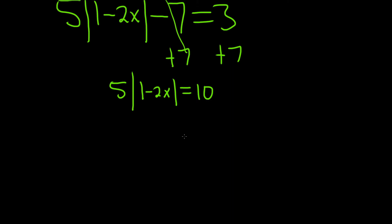And we're almost there. The 5 is being multiplied by this absolute value, so now we just have to divide by 5. So we have the absolute value of 1 minus 2x, and that's equal to 2 because 10 over 5 is 2.